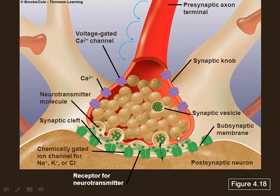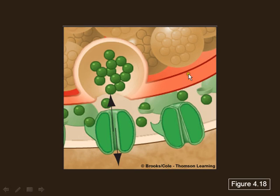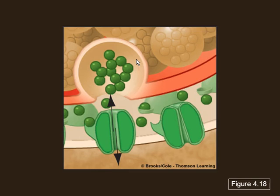This reuptake process is extremely important in pharmacology. Anytime you're talking about neuroactive drugs, they work on these neurotransmitters. For instance, a selective serotonin reuptake inhibitor (SSRI) inhibits that little pump, blocking reuptake and increasing the amount of serotonin in the synaptic gap.